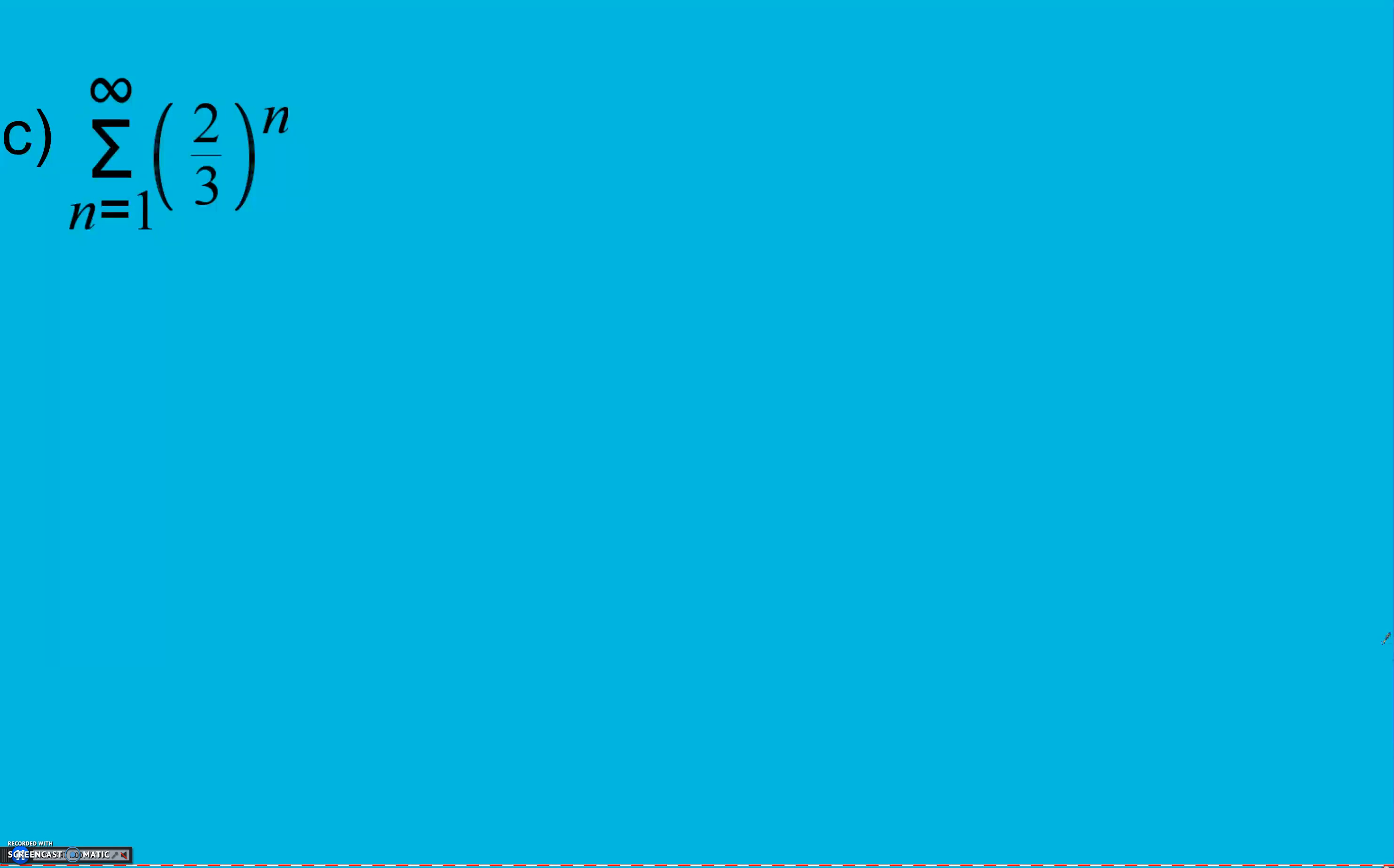Last one here. The number inside my exponential is my r, it's my common ratio. And it's two thirds, which is less than one, which means it's going to converge. And we can find our sum. So our sum is going to be our first term. We need to find our first term here. So we take two thirds to the first power, which gives us just two thirds. And we divide by one minus our common ratio, two thirds.